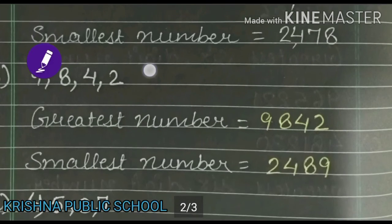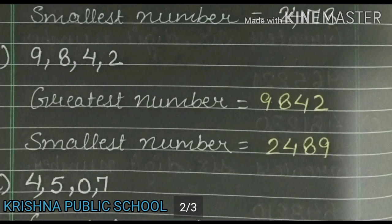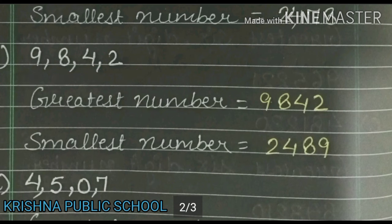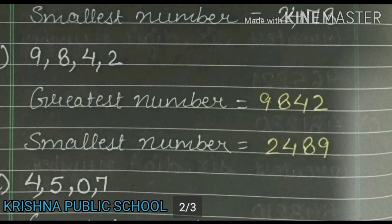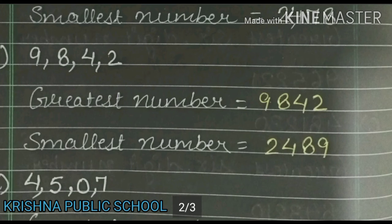Now we see part number B. We have given digits 9, 8, 4, 2. For the greatest number, we arrange in descending order: 9, 8, 4, 2 — so the greatest number is 9,842. For the smallest number, we arrange in ascending order: 2, 4, 8, 9 — so the smallest number is 2,489.